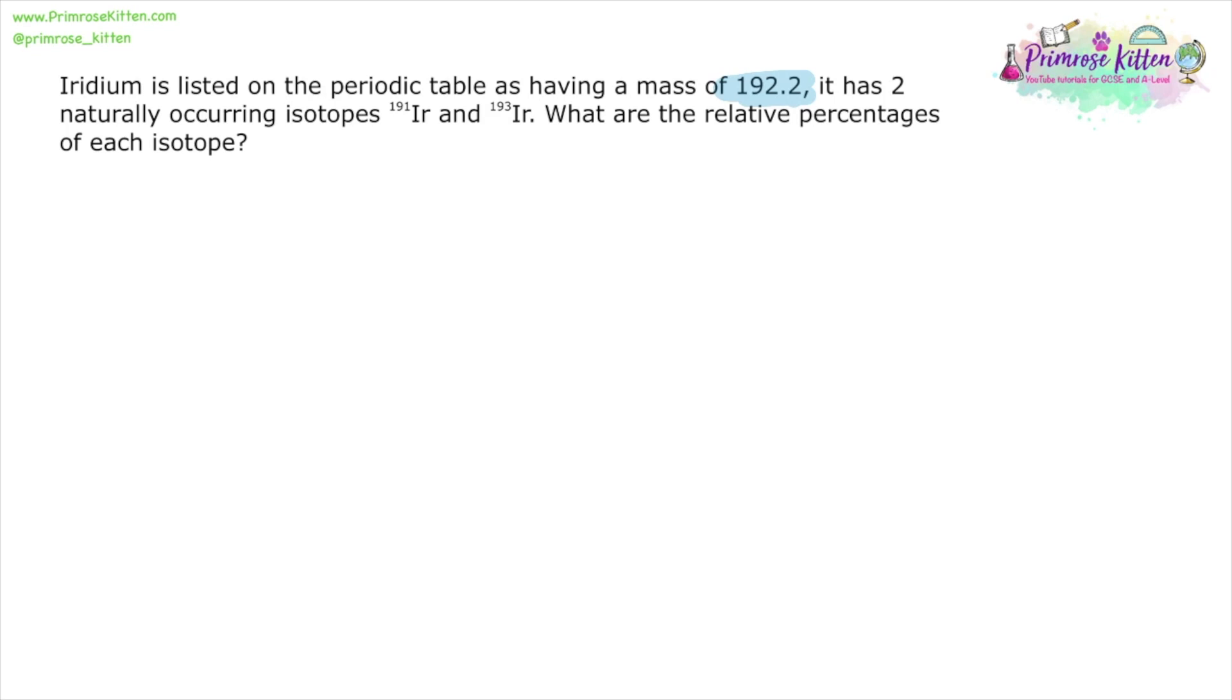Iridium is listed on the periodic table as having a mass of 192.2. It has two naturally occurring isotopes: iridium-191 and iridium-193. What are the relative percentages? Now for this we need algebra.